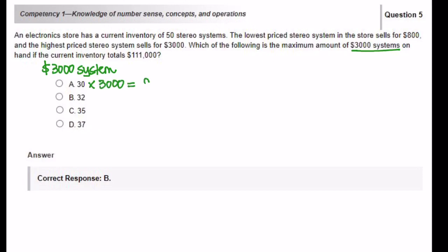Let's take that 30 and multiply it by $3,000. That's going to get us $90,000. If there are 30 of the $3,000 system, how many of the $800 systems do we have? We have 20 because there are 50 stereo systems. 20 times $800 is going to get us $16,000. Together, the $90,000 plus the $16,000 is going to get us $106,000.